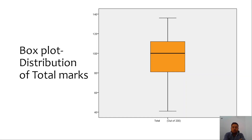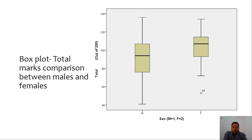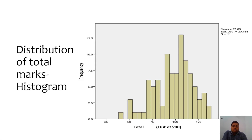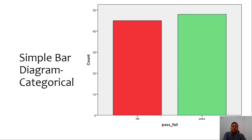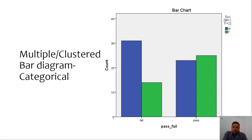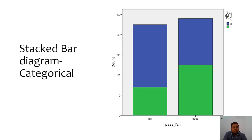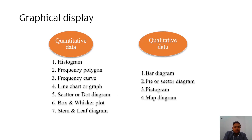He did the same thing separately for boys and girls and could see that females scored better marks than boys — in fact the interquartile range was also better for females. He also looked at the distribution of total marks for the whole class with a histogram, and plotted histograms separately for males and females. To show how many passed or failed, he plotted a bar diagram or pie diagram. Adding an extra layer of gender, he used a multiple or clustered bar diagram — showing that far more females passed than males. The same was visible in a stacked bar diagram.